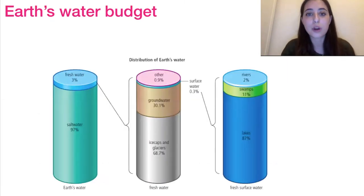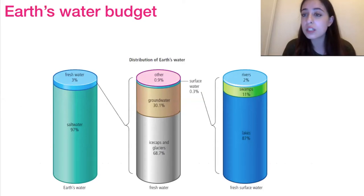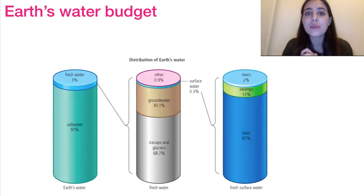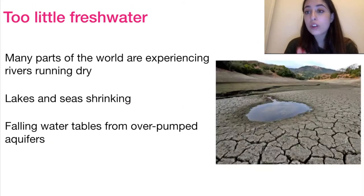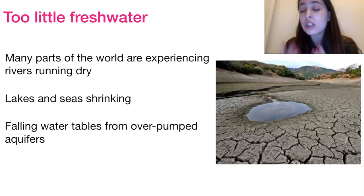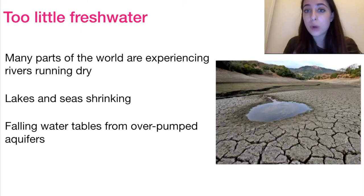So let's look at the Earth's water budget. This diagram shows you really well how the vast majority of water on Earth isn't in a usable form. Only 3% is freshwater, and of that 3%, around 70% is in ice caps or glaciers — so again, unavailable. This really shows the distribution of Earth's water in terms of what we can use. Already, you can see that water scarcity is a problem, and not only has this already been a problem, but many parts of the world are experiencing further water scarcity — rivers running dry, lakes and seas shrinking, and water bodies being over-pumped at an unsustainable rate.